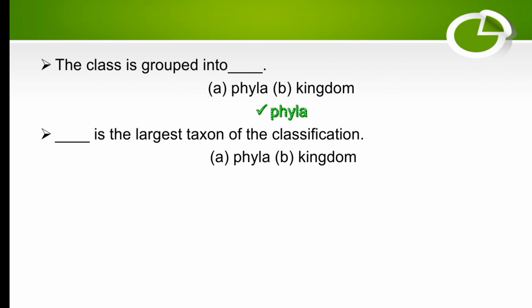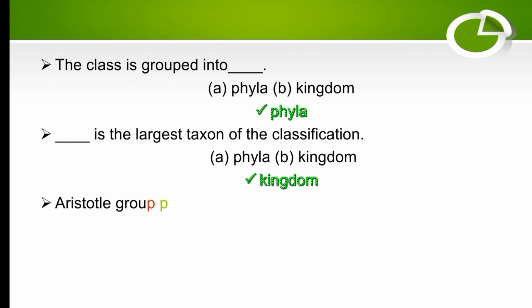The largest taxon of classification is kingdom — the right option is kingdom. Kingdom is the largest taxon of the classification.